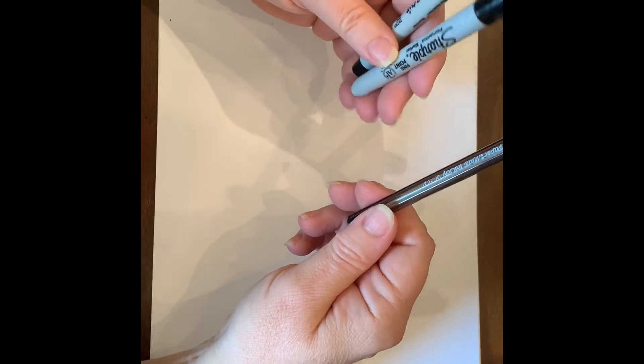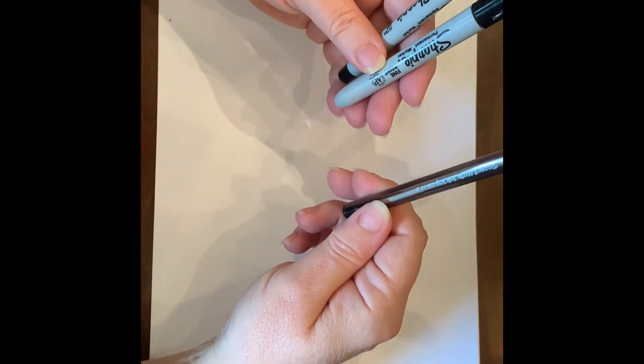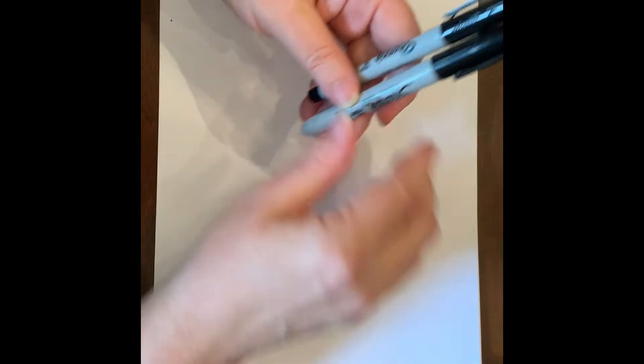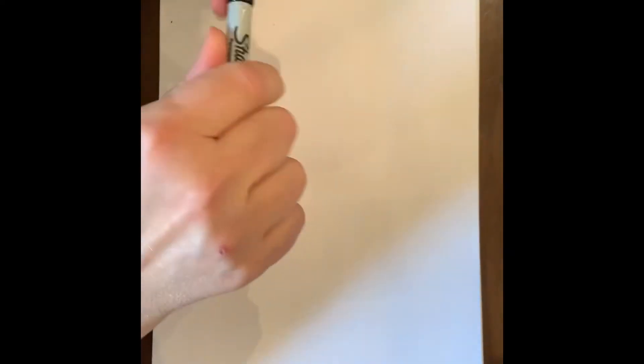You could even use a Crayola marker if that's all you've got at home. So the first thing we're going to do, I'm going to choose the small Sharpie to start with. The first thing we're going to do is make two shapes and you notice I'm not using my ruler, please don't use your ruler.